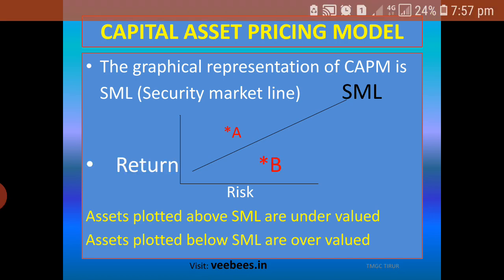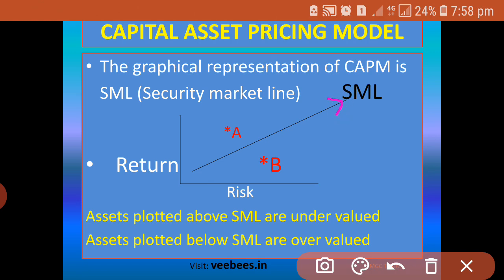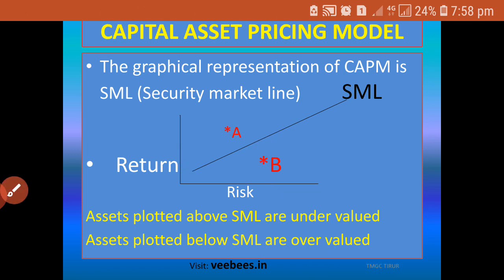Assets plotted below the SML are overvalued. Security B is plotted below the SML line. When compared to the SML, security B has taken a certain level of risk but the actual return received is lower than what was expected for that risk level. Because the return is low compared to the risk taken, the asset is overvalued — it was purchased at a higher price than warranted.